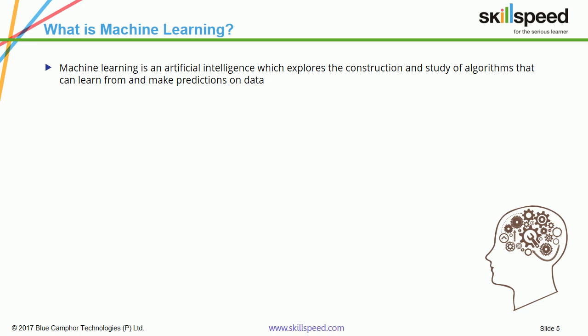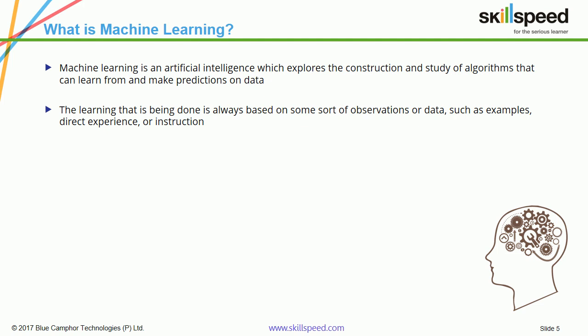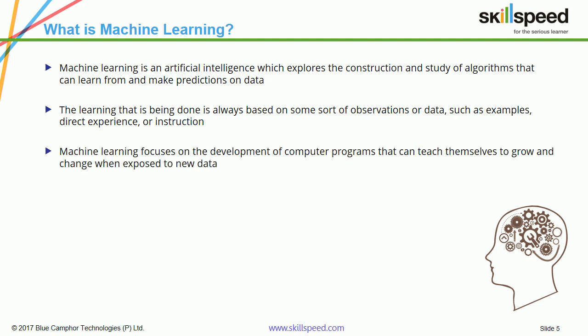Using a set of algorithms and some examples and observations, machines are able to learn on their own, and this technique is called machine learning. The learning is always based on some sort of observation or data such as examples, direct experience, or instruction — and many times we use a combination of all these. Machine learning focuses on the development of computer programs that can teach themselves to grow and change when exposed to new data. The idea is to create a world where systems are self-sufficient to make decisions. Machine learning is not here to replace human intelligence but to co-exist and solve problems in a better way.